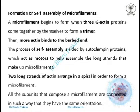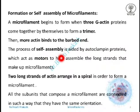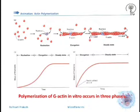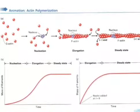The plus end assembles and disassembles at a faster rate than the minus end. Once the trimer is formed, more actin binds to the barbed end — the plus end — and the process of self-assembly is aided by autoclamping proteins, which act as motors to help assemble the long strands. The two long strands of actin are arranged spirally to form a microfilament, and all subunits are connected with the same orientation. This diagram illustrates the nucleation, elongation, and steady state of microfilament assembly.